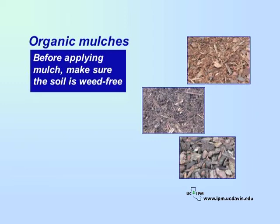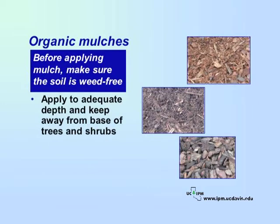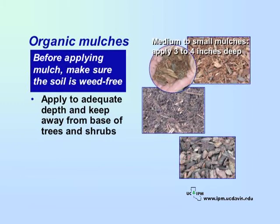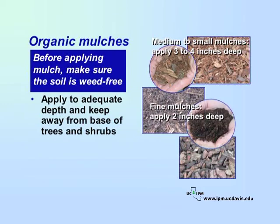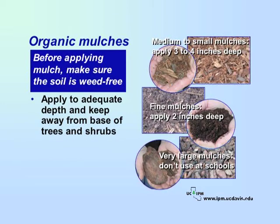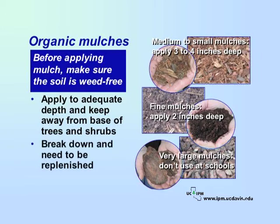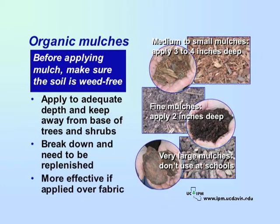Organic mulches can be very effective if applied correctly. The key is to apply them to an adequate depth that keeps light from reaching the soil. Be sure to keep mulch away from the base of woody trees and shrubs. Medium to small mulches, such as wood shavings or small wood chips about ¾ inch, should be applied 3 to 4 inches deep. Very fine mulches such as compost or leaf mold can be applied about 2 inches deep; however, these may not control weeds because weed seeds can blow in and grow. Very large and throwable mulches such as bark, wood, or rock should not be used at schools. Organic mulches gradually break down and need to be replenished in order to remain effective, and are more effective and longer lasting if applied over a landscape fabric.